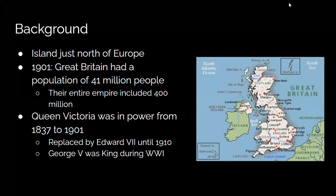Some background about Great Britain: it's an island just north of the rest of Europe. In 1901, Great Britain had a population of 41 million people. However, their entire empire, which includes colonies and territories, included 400 million people.